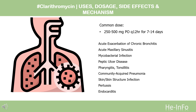For mycobacterial infection, indicated for treatment and prophylaxis: 500 mg PO every 12 hours for 7–14 days. For treatment of disseminated infection caused by Mycobacterium avium complex (MAC), use in combination with other antimycobacterial drugs, for example, ethambutol.